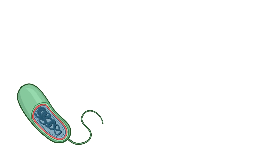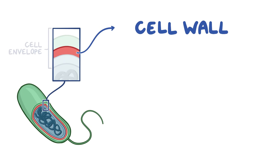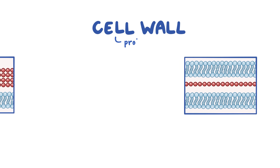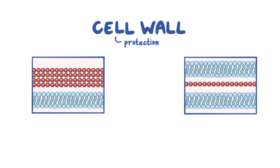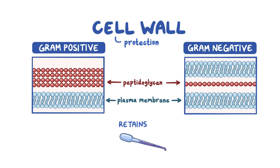Bacterial cells are often surrounded by several layers, which are collectively called the cell envelope. Starting with the cell wall, which is found on the outer surface of the cell membrane — its most important role is to protect the bacteria. It consists of peptidoglycan, which helps differentiate whether bacteria are gram-positive or gram-negative. Gram-positive bacteria have a single thick layer of peptidoglycan above the plasma membrane, which allows them to retain the staining dye.